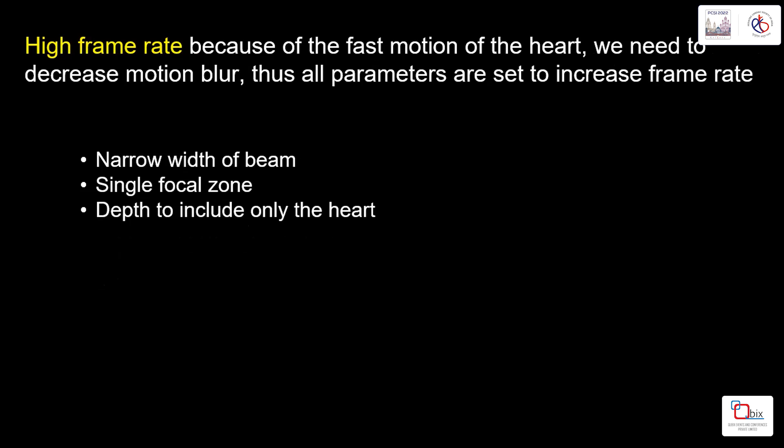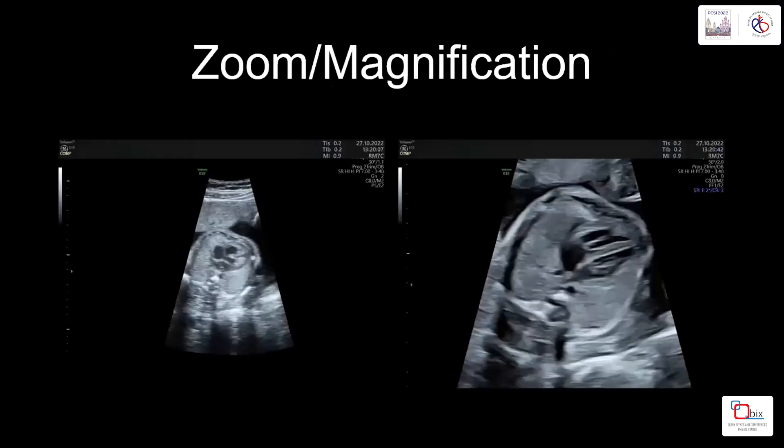Secondly, we need a high frame rate because of the fast motion of the heart — we need to decrease motion blur. All parameters should be set to increase the frame rate: narrow the width, use a single focal zone to increase frame rate, and include only the heart by adjusting depth and magnification.